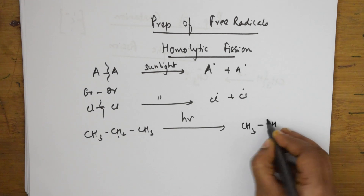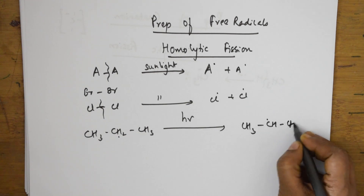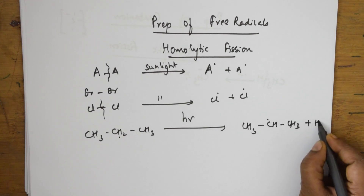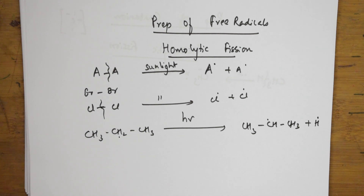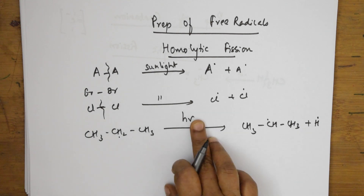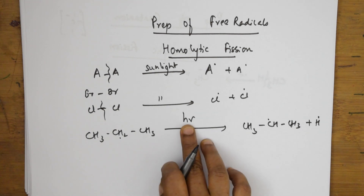The alkane forms a CH₃–CH₂ free radical and an H free radical — this is how the free radical is formed from an alkane in sunlight. Now let us see the formation of free radicals by one more method: thermolysis. Thermo means in the presence of heat, because free radicals are formed in the presence of heat.